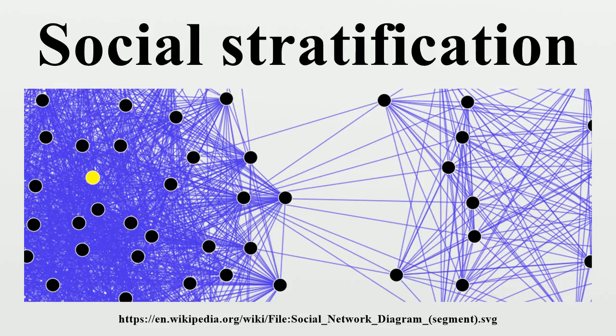Those systems in which there is little to no mobility, even on an intergenerational basis, are considered closed stratification systems. For example, in caste systems, all aspects of social status are ascribed, such that one's social position at birth is the position one holds for a lifetime.